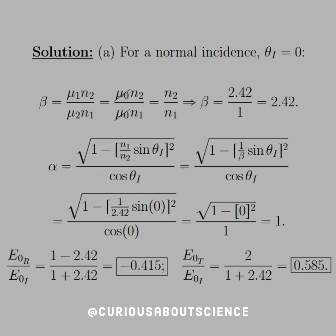For normal incidence, theta_I equals 0, and a lot of things seem to cancel. Beta is equal to — since mu0 equals mu1 equals mu2, those cancel — so beta equals N2 over N1, which numerically simplifies to 2.42. Plugging in for alpha, we see that alpha goes to 1 minus (1 over beta) times sine theta_I over cosine theta_I, all squared. Since sine of 0 is 0 and cosine of 0 is 1, alpha is equal to 1.